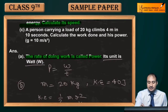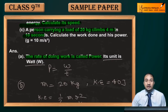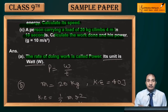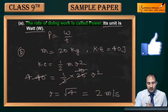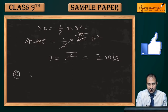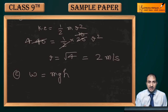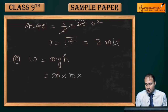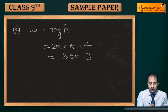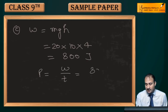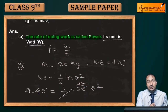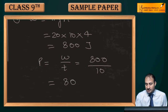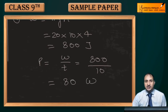Next question: A person carrying a load of 20 kg climbs 4 meters in 10 seconds. Calculate the work done and power. Work done = mgh = 20 × 10 × 4 = 800 Joules. Power = work upon time = 800 / 10 = 80 Watt. So the power is 80 Watt.